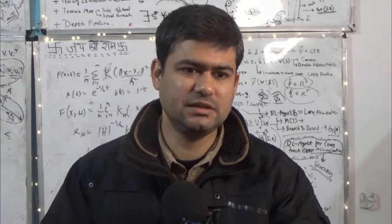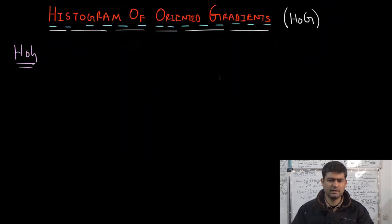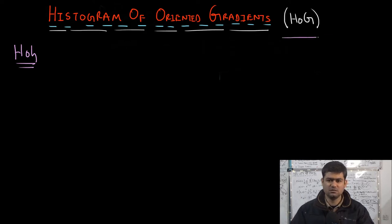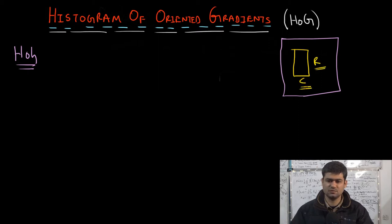The first step in the HOG descriptor involves describing a patch around a feature point or an image patch. This is our original image, and there is a patch inside this image of dimension r cross c, meaning r rows and c columns.